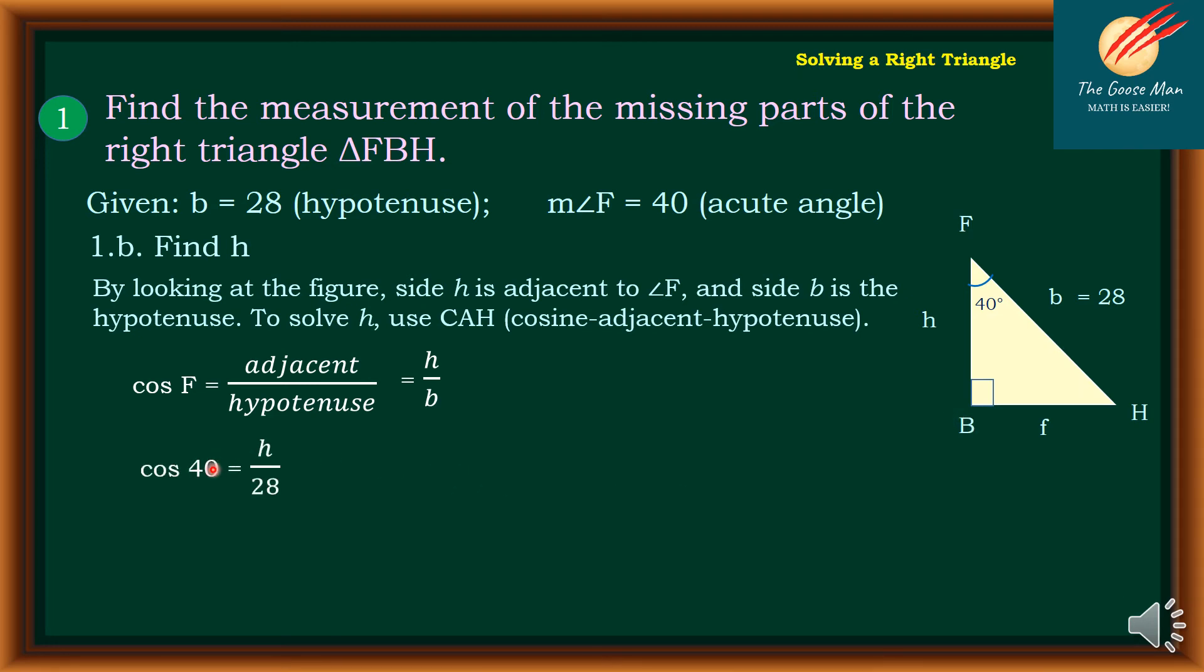Cosine 40 degrees, that is F equals 40, and h is unknown over the value of b which is 28. Using the cross products, I can have 28 times cosine 40 equals h.